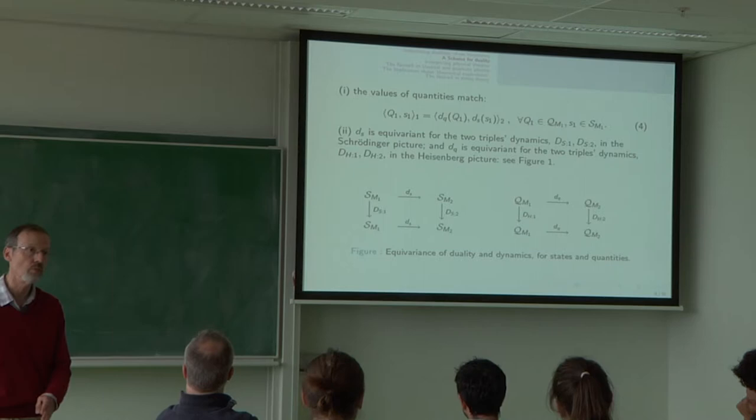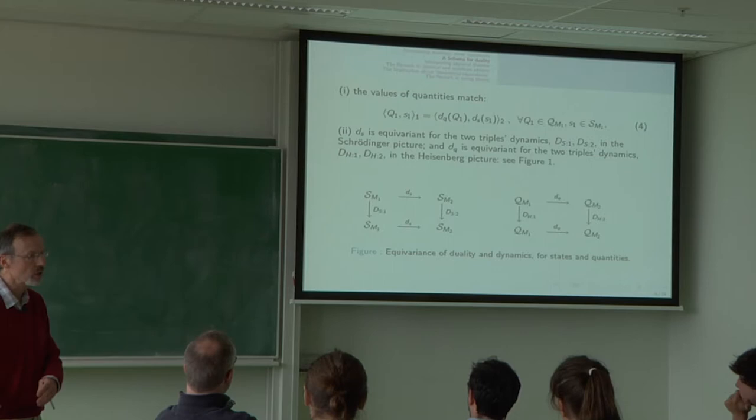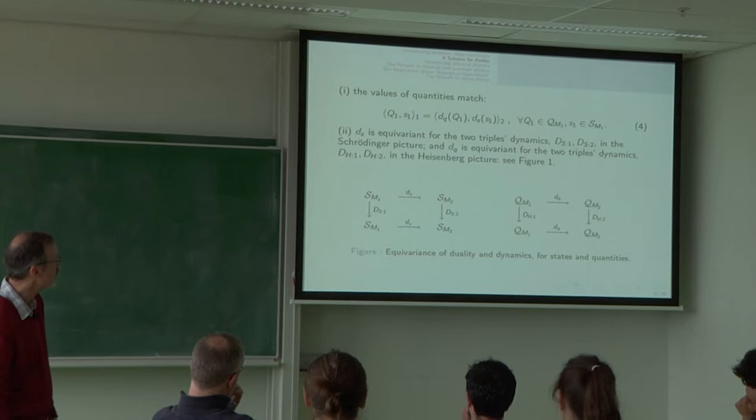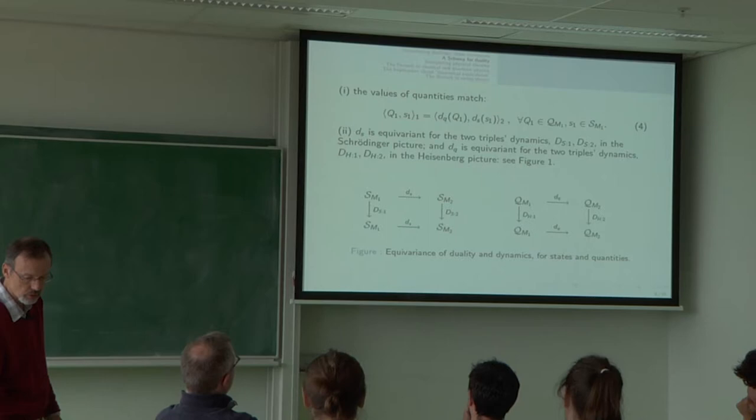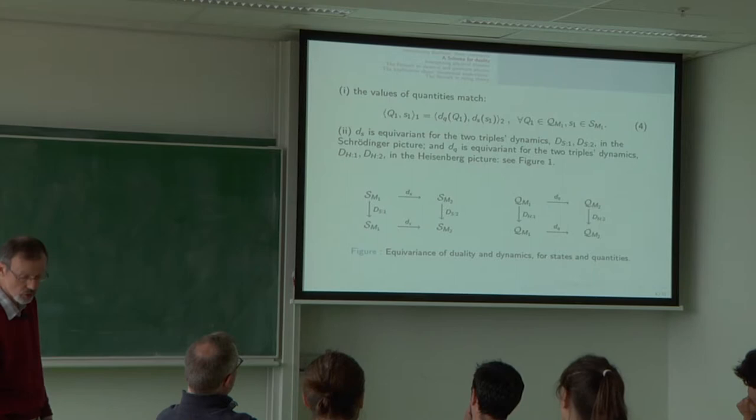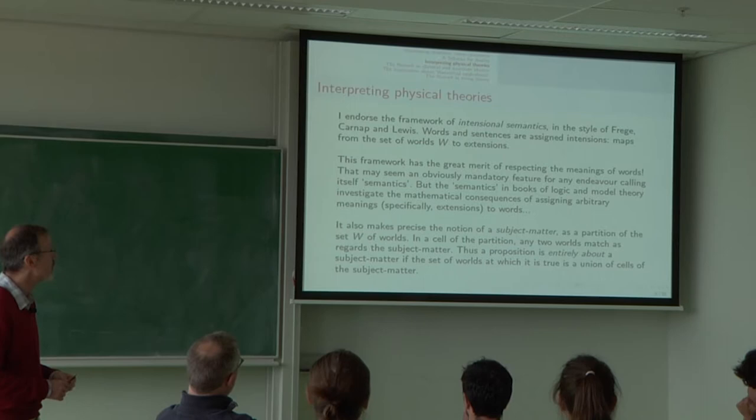So, that equation at the top is very like the general idea of a symmetry. I've mapped the states, I've preserved the values. We'll see that in a bit more detail. If you had a single theory, it was the same model triple, 1 and 2 were the very same. You'd be essentially talking about a symmetry. And, the second half of the diagram is making the comment that all this needs to respect the dynamics. And, once you think of the dynamics as moving the states over time. So, we use the jargon from quantum theory, we talk about the Schrödinger picture, where the states change over time. Or, you can think of the Heisenberg picture, in which it is the quantities that change over time.